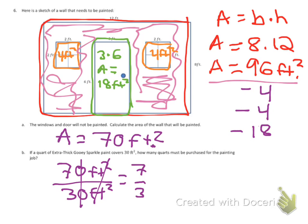3 goes into 7 twice with a remainder of 1 third. So they would need 2 and 1 third quarts of paint, which means that they're going to have to purchase 3 quarts of paint.